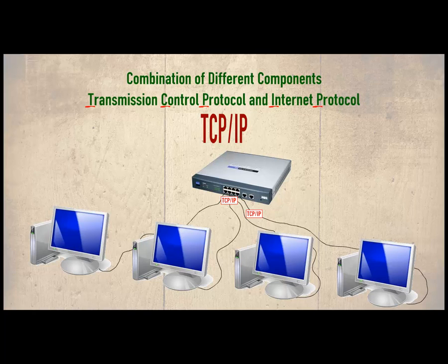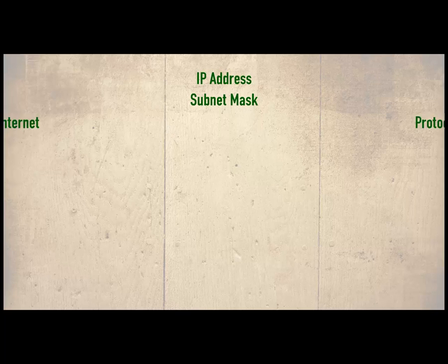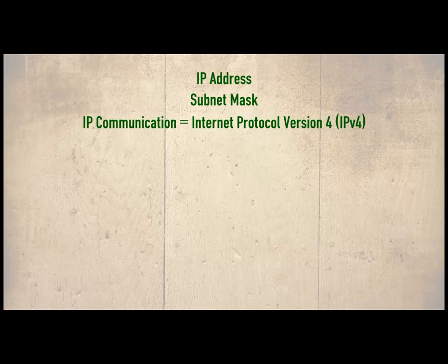To connect to a TCP/IP network a host needs two pieces of information: an IP address and subnet mask. This next section focuses on the basic TCP/IP configuration settings. At the time of writing, the majority of IP communication will use Internet Protocol version 4, also known as IPv4. In the future, another version of IP will become more common, known as IP version 6. An introduction to this is included later in the unit, but the majority of configuration here will use IPv4.